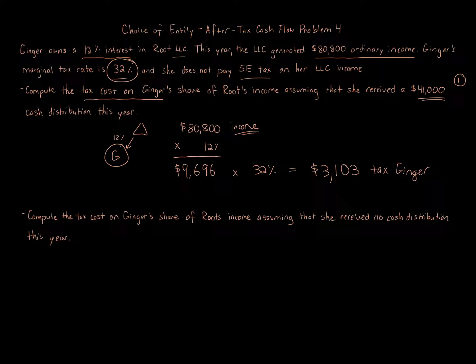Now, that's the amount of tax that Ginger has to pay on this allocated income—the tax Ginger owes on Ginger's share, which is what it's asking: compute the tax cost. You're saying, well, what about this $41,000 cash distribution?